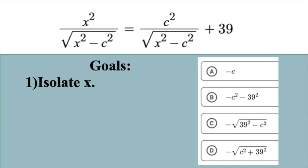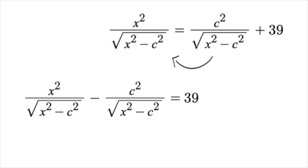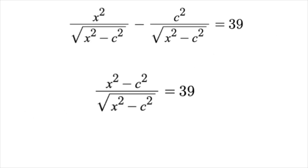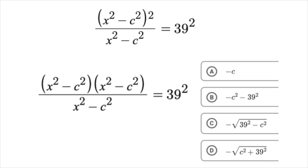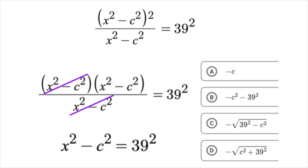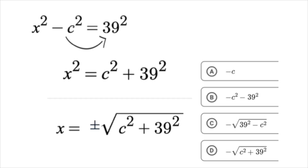Or you could have just worked toward isolating x on one side of the equal sign, as College Board shows in its explanation. Collect all terms with x on one side of the equal sign. We get x squared minus c squared over square root of x squared minus c squared equals 39. Resist the urge to cross multiply — square both sides. Expand the numerator and cancel x squared minus c squared because they simplify to 1. Keep working towards isolating x, so add c squared on each side. Take the square root of each side. We can see that our answer is D again.